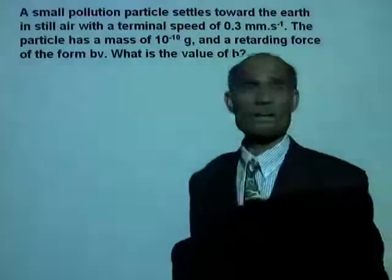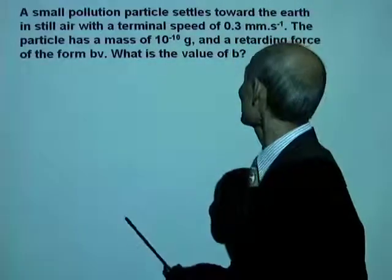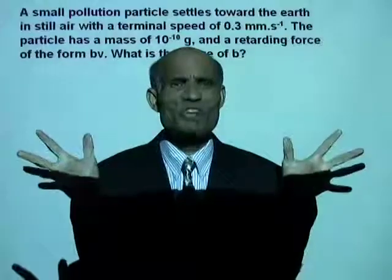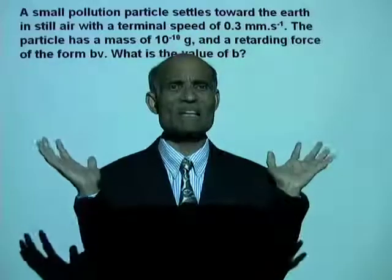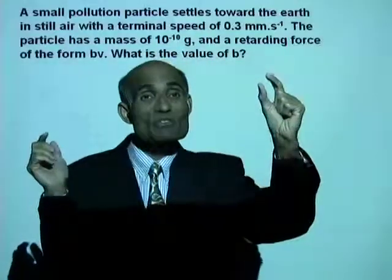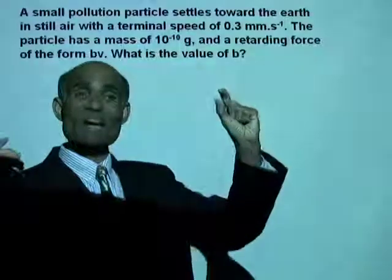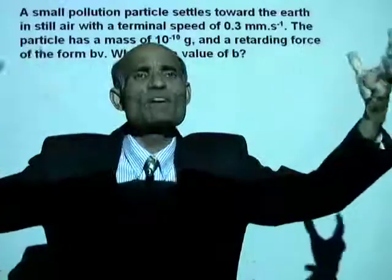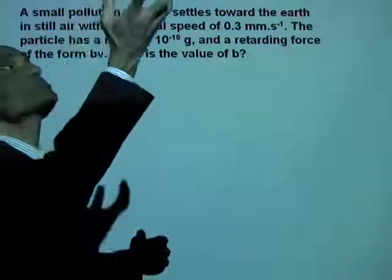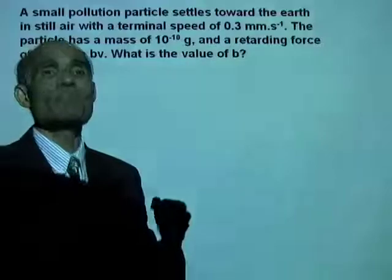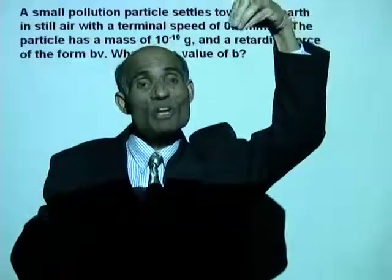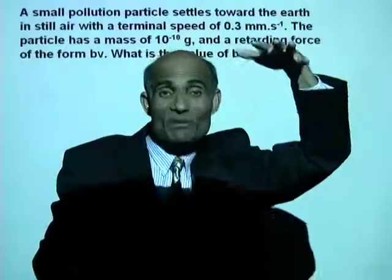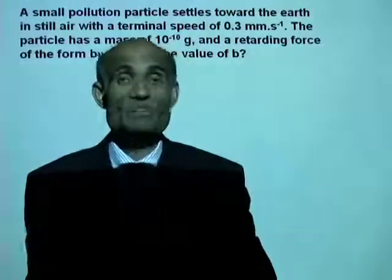A small pollution particle settles towards the earth. Dust particles roam around in the air — if light comes through a hole into your room, you can see many dust particles in its path. Because they are so small, pollution particles reach terminal speed very quickly and move down with terminal speed. This problem involves a pollution particle settling in still air with a terminal speed of 0.3 millimeter per second.